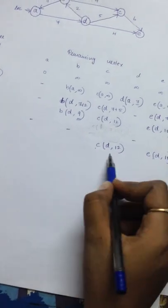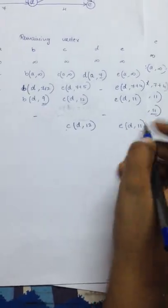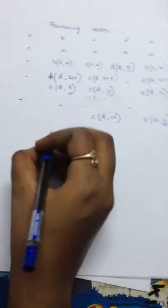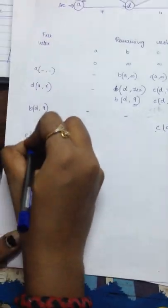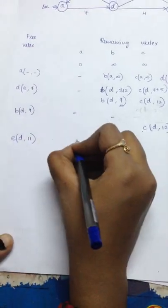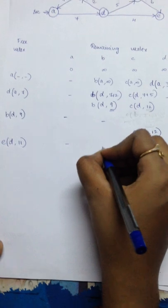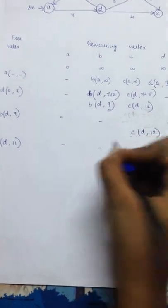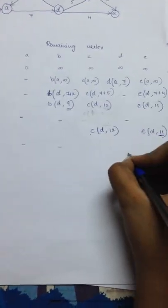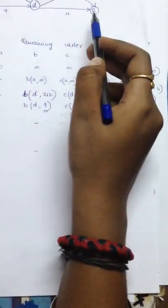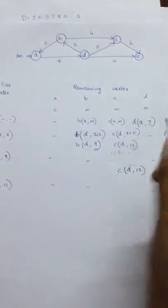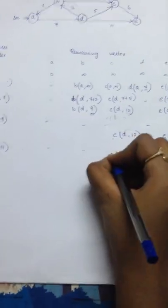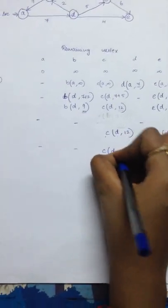Now, when we compare these 2 nodes, it is found that E is lesser. 11 is lesser. So it will be the next accessed node. E to A no connection. B to E no connection. E to D no connection. E to E no connection. From E to C, there is no connection. So you bring down C of D comma 12.